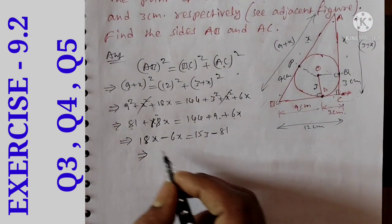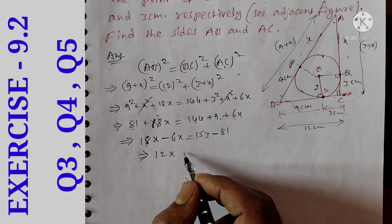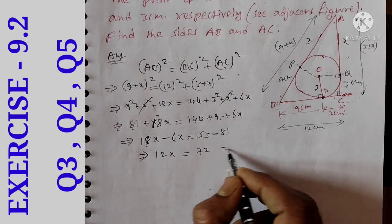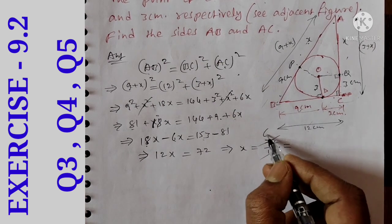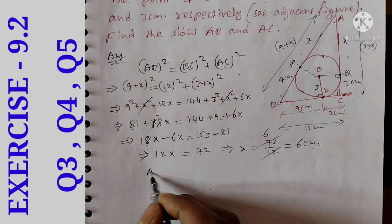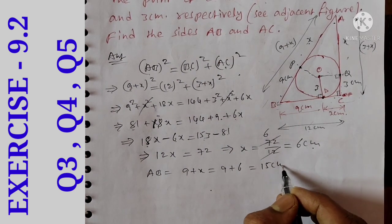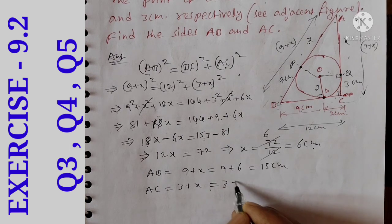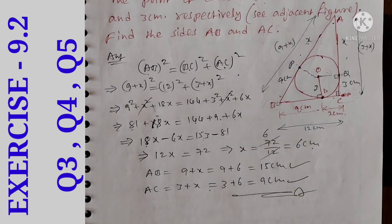Therefore x = 72 ÷ 12 = 6 cm. AB length = 9 + x = 9 + 6 = 15 cm. AC length = 3 + x = 3 + 6 = 9 cm. These are the two sides of the given triangle.